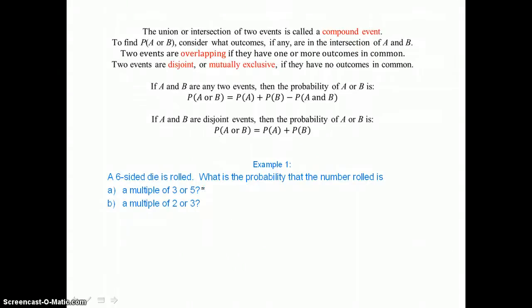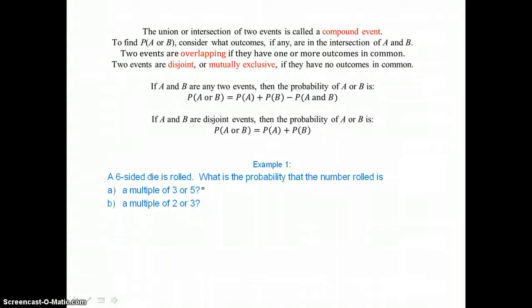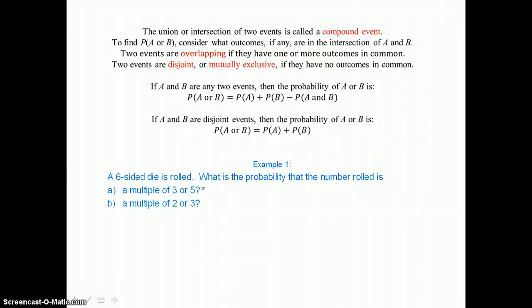The union or intersection of two events is called a compound event. If A and B are any two events, then the probability of A or B is equal to the probability of A plus the probability of B minus the probability of A and B. If A and B are disjoint events, then the probability of A or B is equal to the probability of A plus the probability of B.